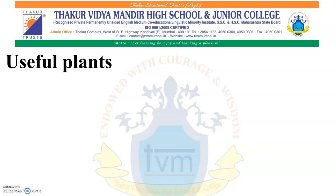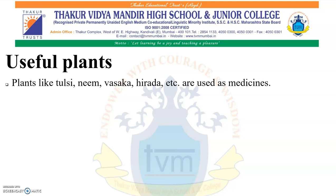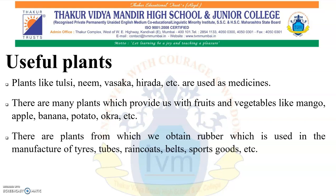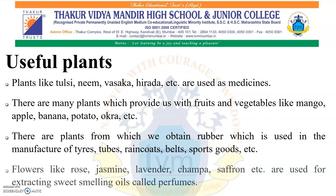Now let us see the usefulness and harmfulness of different plants and animals. Starting with useful plants: plants like tulsi, neem, vasaka, hirada, etc. are used as medicine. Many plants provide us with fruits and vegetables like mango, apple, banana, potato, okra, etc. There are plants from which we obtain rubber, used in manufacturing tires, tubes, rain coats, belts, sports gear, etc. Flowers like rose, jasmine, lavender, champa, and saffron are used for extracting sweet-smelling oils called perfumes.